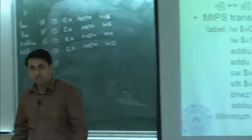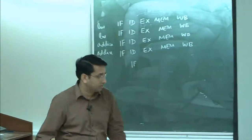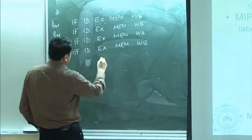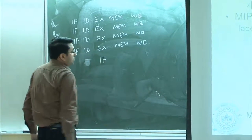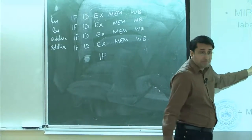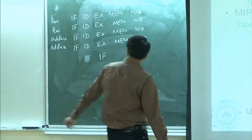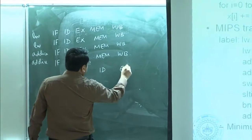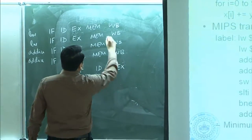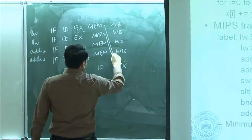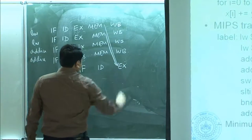So I have to put a stall cycle — there is no other option. After one cycle stall, I can probably send this one, because this one will pick up the value from the bypass.